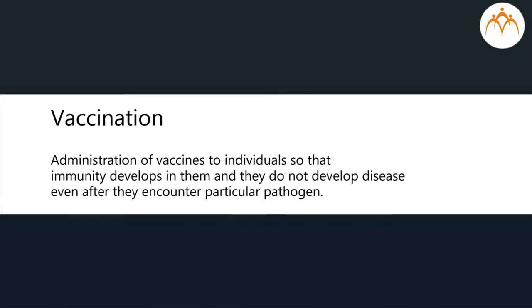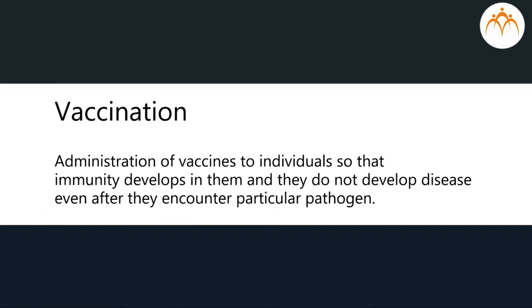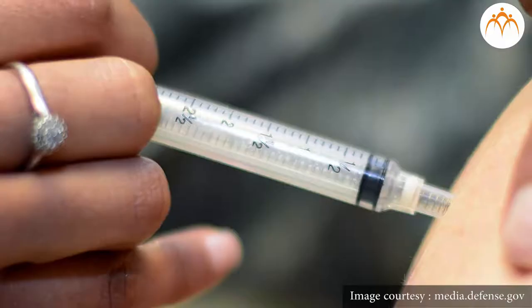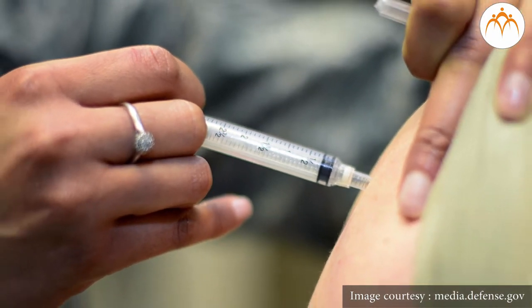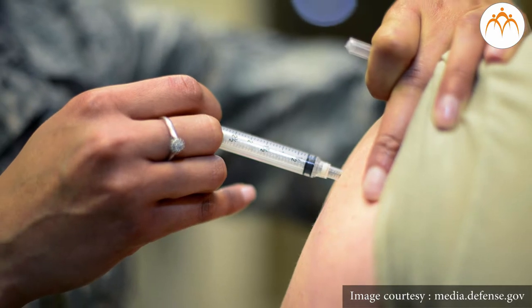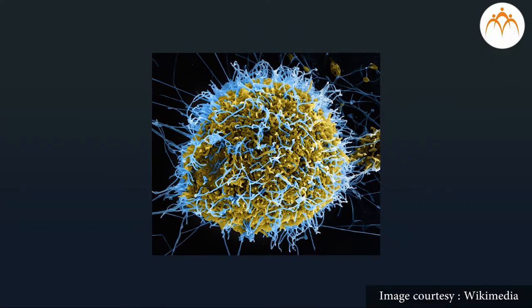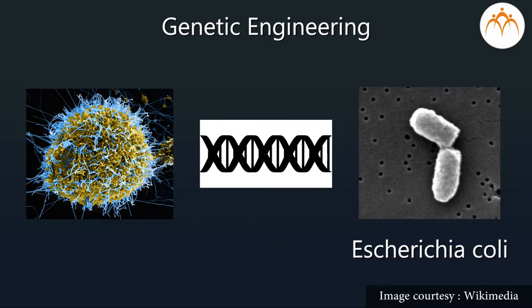This understanding led to the development of the practice of vaccination. Vaccination involves administration of vaccines to individuals so that immunity develops in them and they do not develop disease even after encountering a particular pathogen. A vaccine is a preparation containing the antigen of a particular pathogen, deliberately introduced into an individual to confer immunity. Earliest vaccine preparations involved using actual pathogens either by killing or inactivating them, which had intrinsic risks.